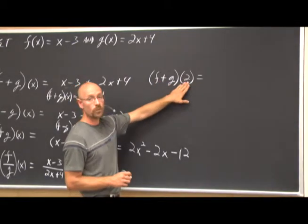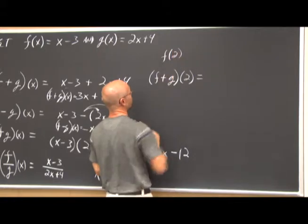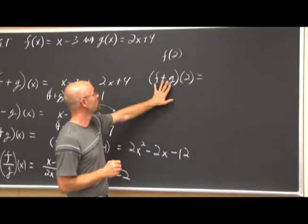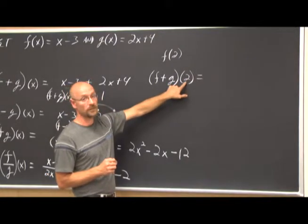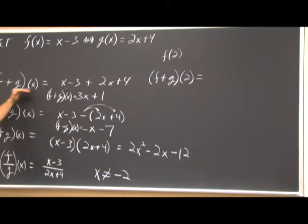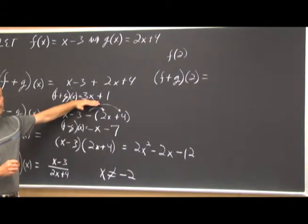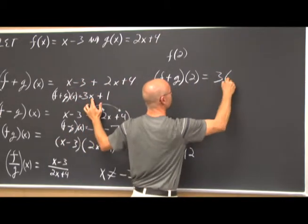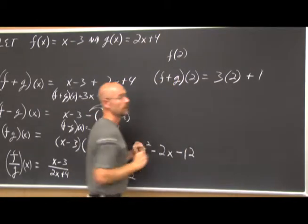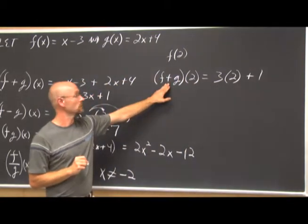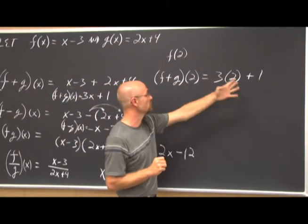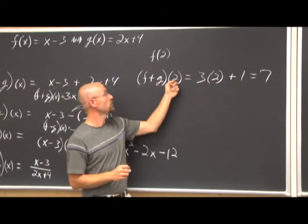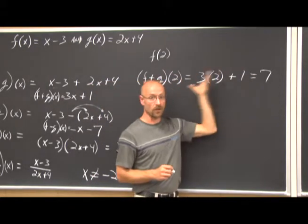Now let's look at f plus g of 2. Recalling function notation, this tells us to add the functions and replace x with 2. We already found that f plus g of x equals 3x plus 1. So f plus g of 2 means replacing x with 2: 3 times 2 is 6, plus 1 equals 7. So f plus g of 2 equals 7 — an input of 2 gives an output of 7 for our new combined function.